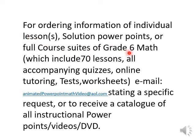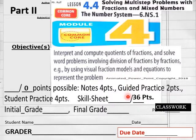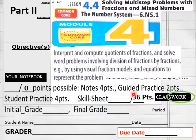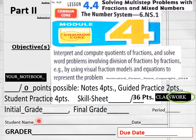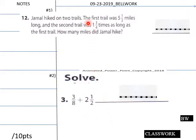Hello everybody, getting ready to do lesson 4.4 Part 2 today for sixth grade math. We've got 36 points on your class worksheet — have that out in front of you now. Students, this is Part 2 of 4.4: solving multi-step problems with fractions and mixed numbers. Put your name, date, and period on your paper on your phone, tablet, PC, iPad, or Chromebook. Let's go to page one for today's bell work.